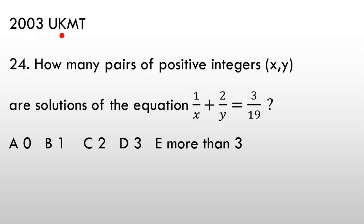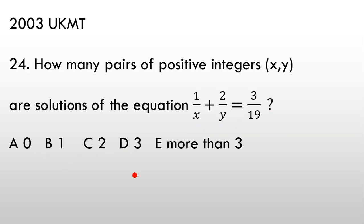2003 UKMT, United Kingdom Mathematics Trust, Question 24. How many pairs of positive integers x and y are solutions of the equation 1/x + 2/y = 3/19? The answer choices are: 0, 1, 2, 3, or more than 3.